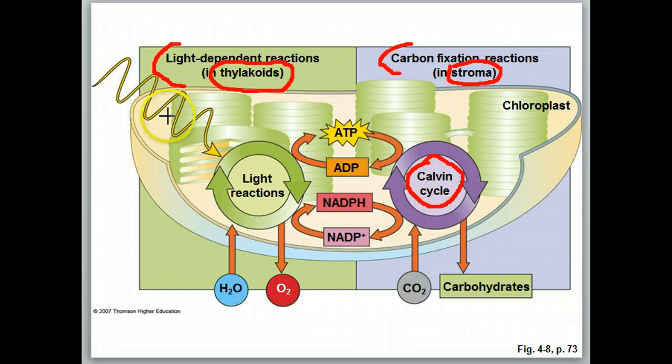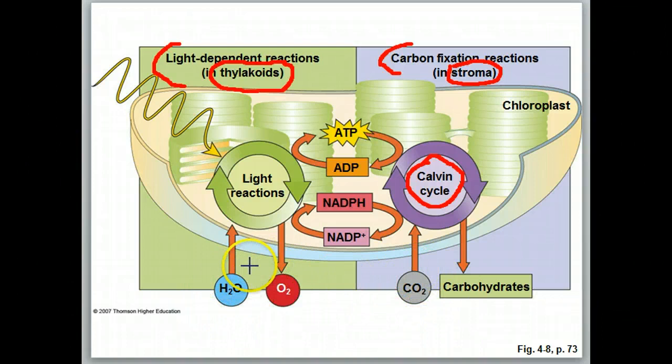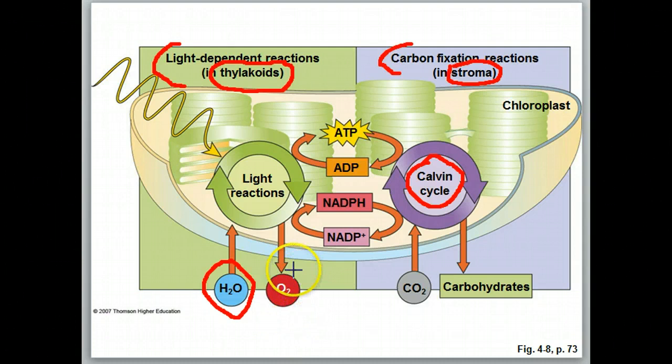The light-dependent reaction is the part that is going to actually absorb the light energy. Recall from the overall reaction, we have two materials that are feeding into photosynthesis: water and carbon dioxide. Water feeds in right here into the light-dependent reaction. That water is going to be split, and the oxygen from that water is not used anywhere else in photosynthesis, so that oxygen is going to be given off as atmospheric oxygen.